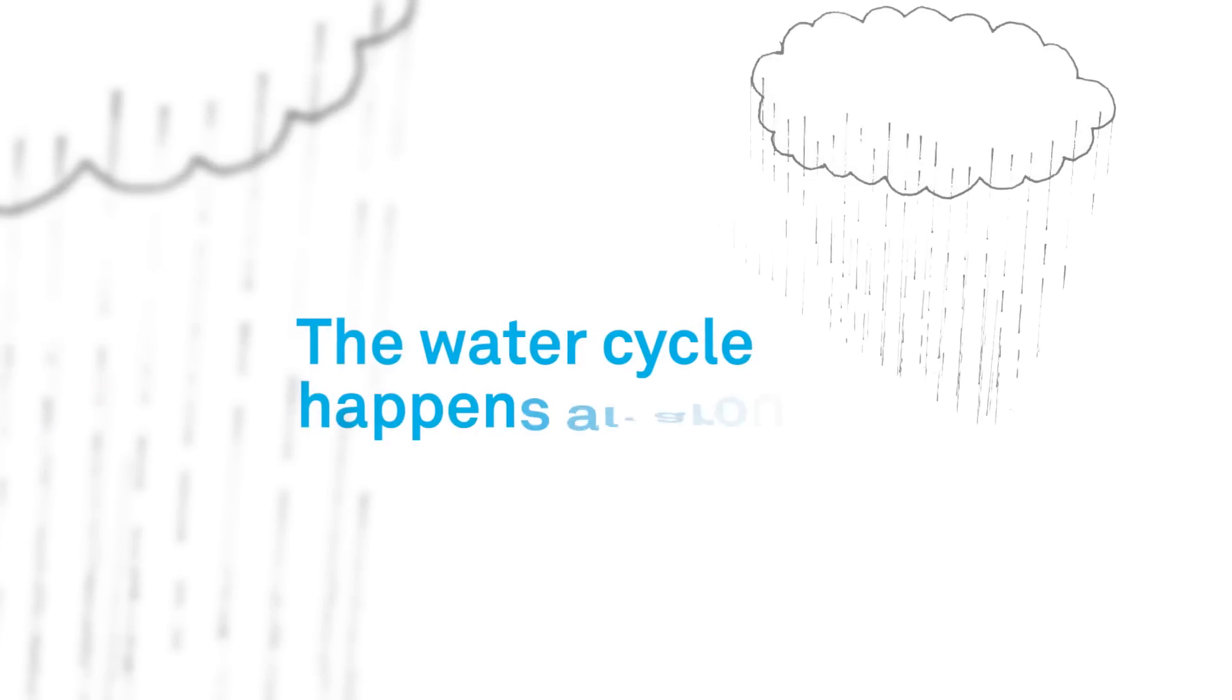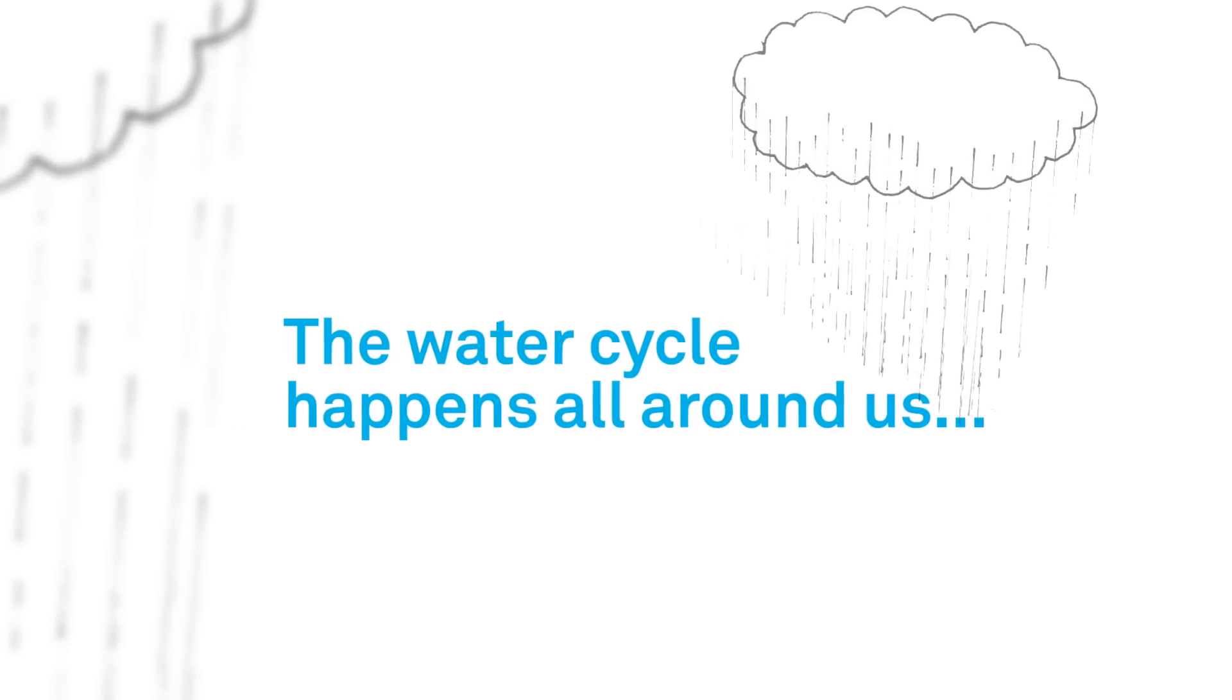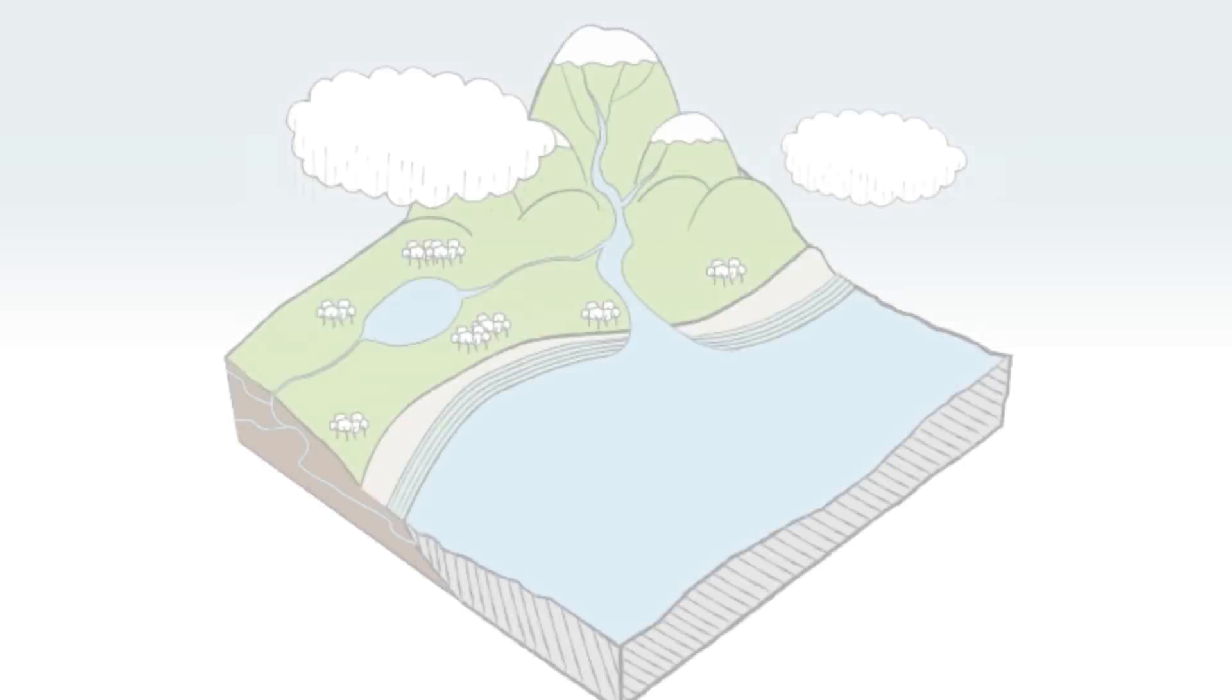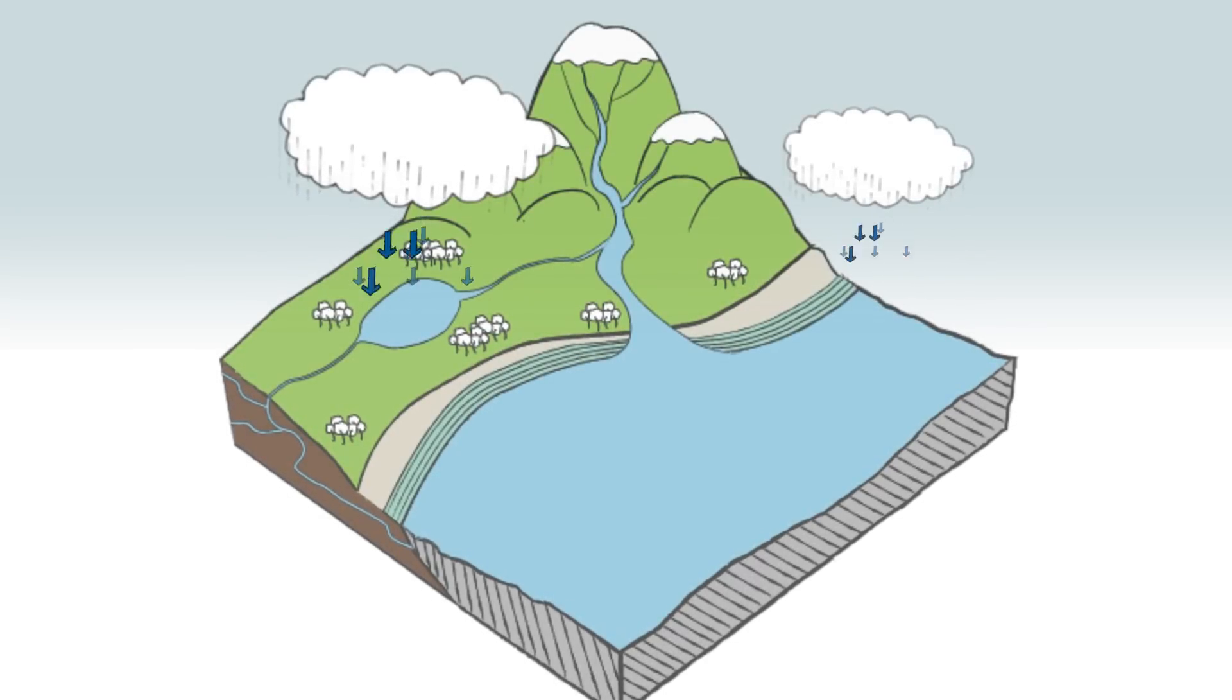The water cycle happens all around us and it is really simple. Rainfall falls on land, sea and waterways.